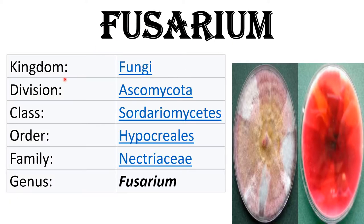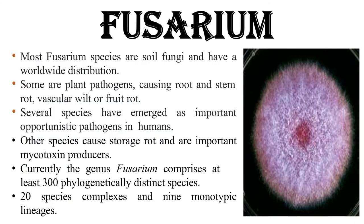Fusarium belongs to the division Ascomycota. Most Fusarium species are soil fungi with worldwide distribution. Some are plant pathogens causing root stem rot, vascular wilt, or fruit rot. Several species have emerged as important opportunistic pathogens in humans. Other species cause storage rot or are important mycotoxin producers. Certain genus of Fusarium comprises at least 300 phylogenetically distinct species, 20 different species complexes, and 9 monotypic lineages.